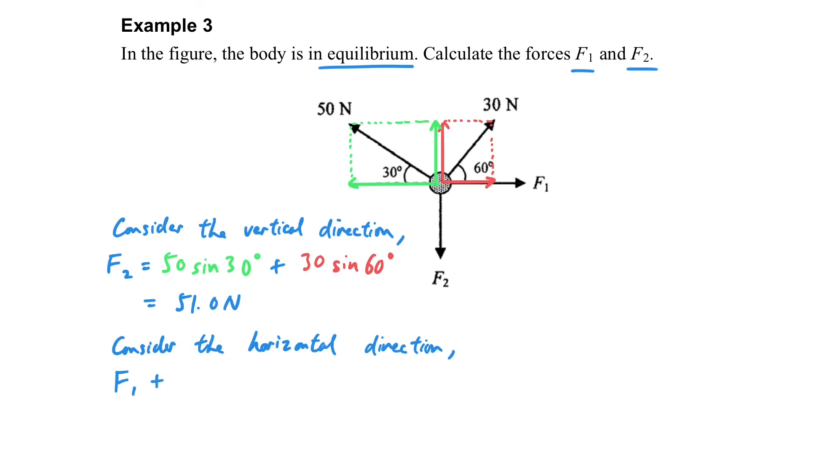So the forces acting on the right hand side should be balanced to the forces acting on the left hand side. So that we can form the equation like this, in order to find the horizontal F1.